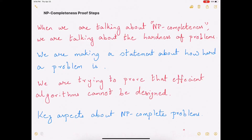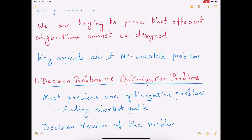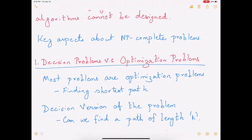So how do we go about proving that a problem is NP-complete? Here are some of the key aspects about NP-completeness that we need to know. The first important thing is decision problems versus optimization problems. When we try to prove NP-completeness, we'll be mainly focusing on decision problems and not optimization problems.